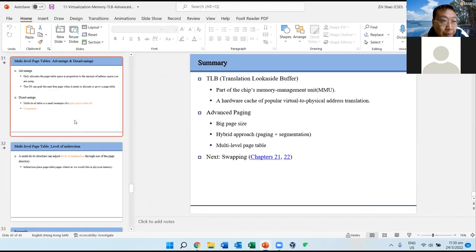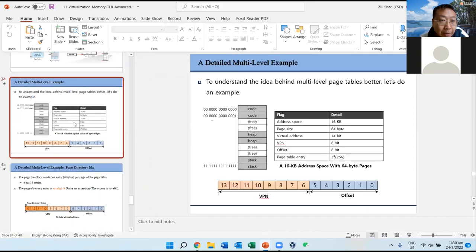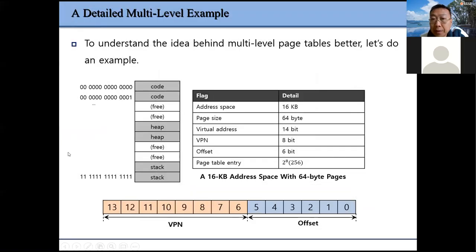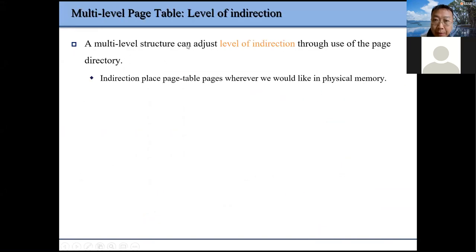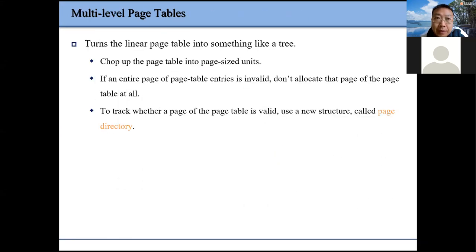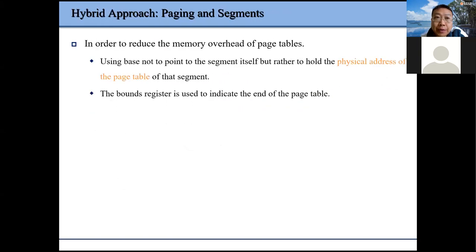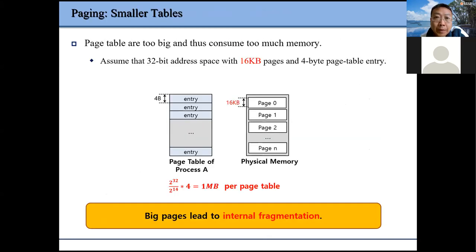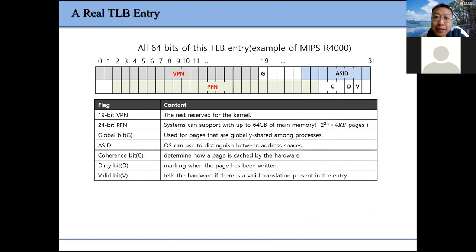Yesterday we stopped here. Before we continue, let me briefly talk about advanced page tables. The first issue we discussed yesterday was TLB. The idea is very simple — basically we want to have a small buffer on the CPU chip so we can quickly get the mapping between virtual page number and physical page number, which we call physical frame number.